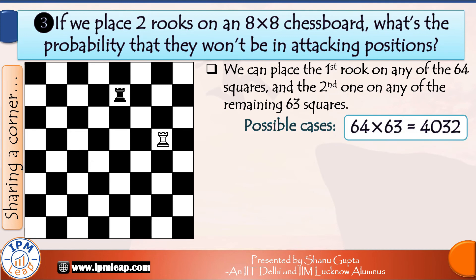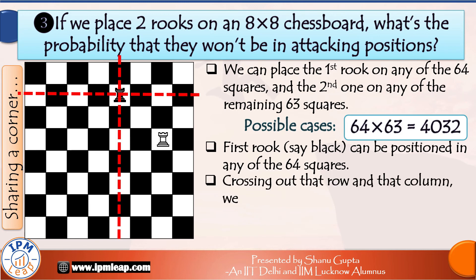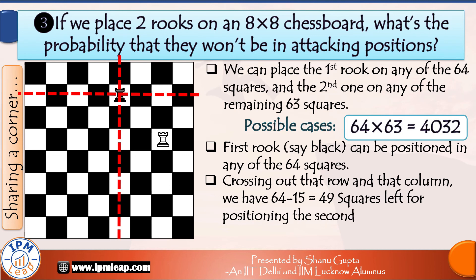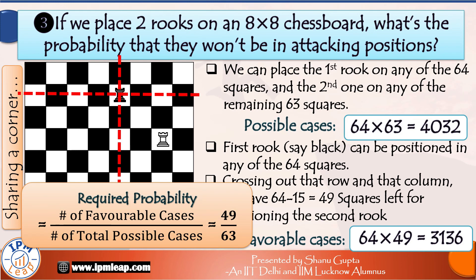Now let's count our favorable cases for the event that these rooks are not in attacking positions. The first rook can be positioned at any of the 64 squares. Now we have to rule out all squares where it can attack horizontally across and vertically across — 8 plus 7, so 15 squares gone. The second rook can be placed on any of the remaining 49 squares. Placing them in this way ensures the two rooks won't be in attacking positions. Therefore the required probability will be 49 over 63, which simplifies to the fraction 7 by 9.